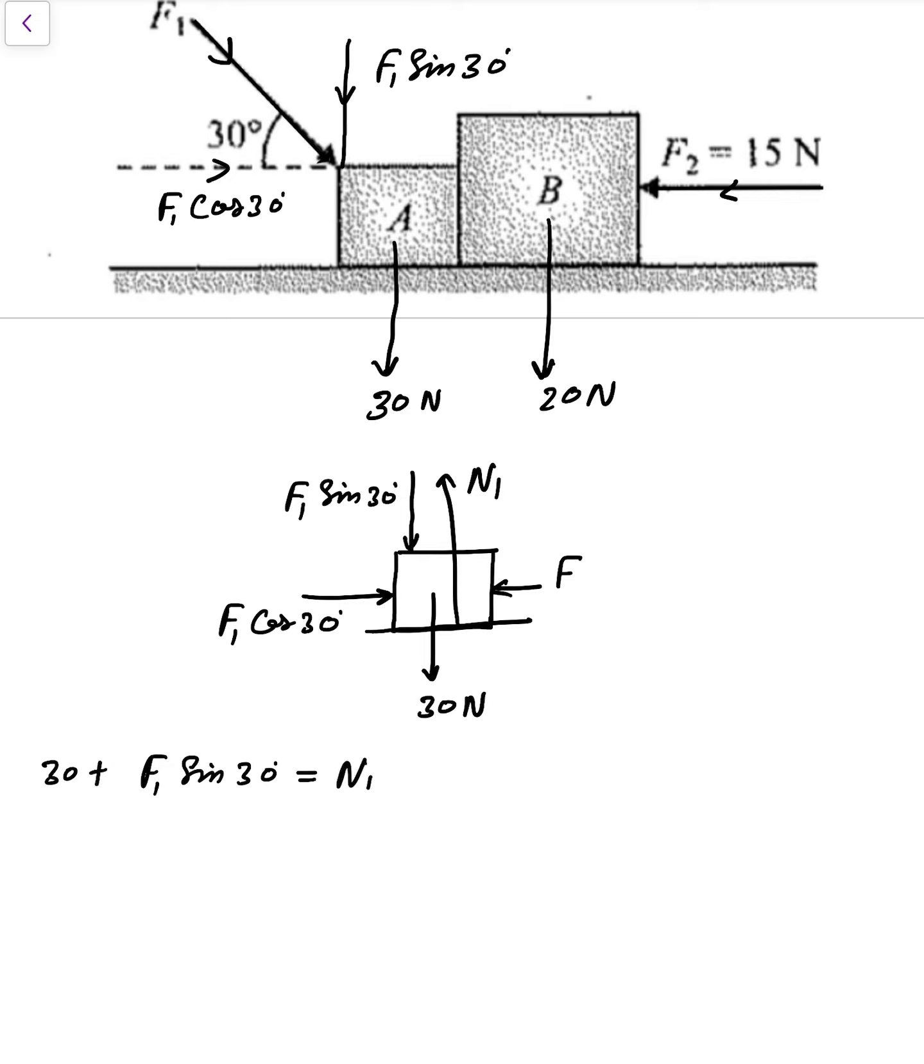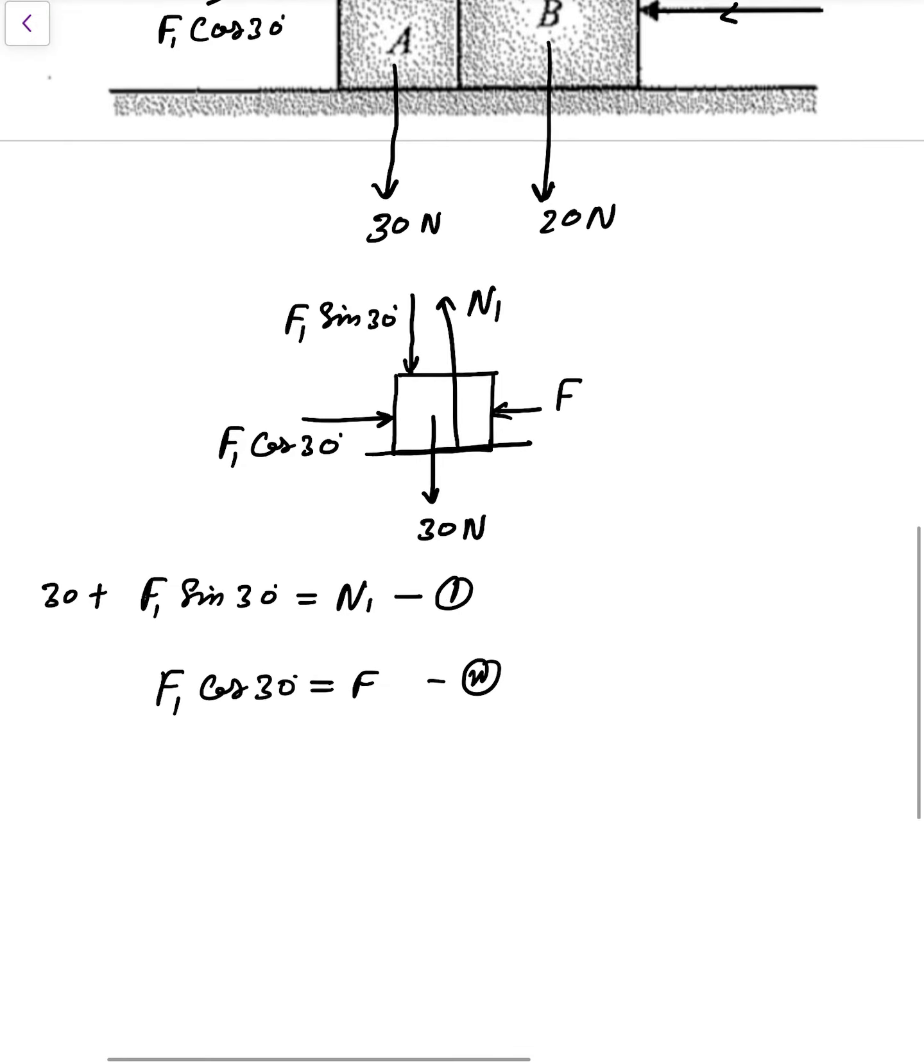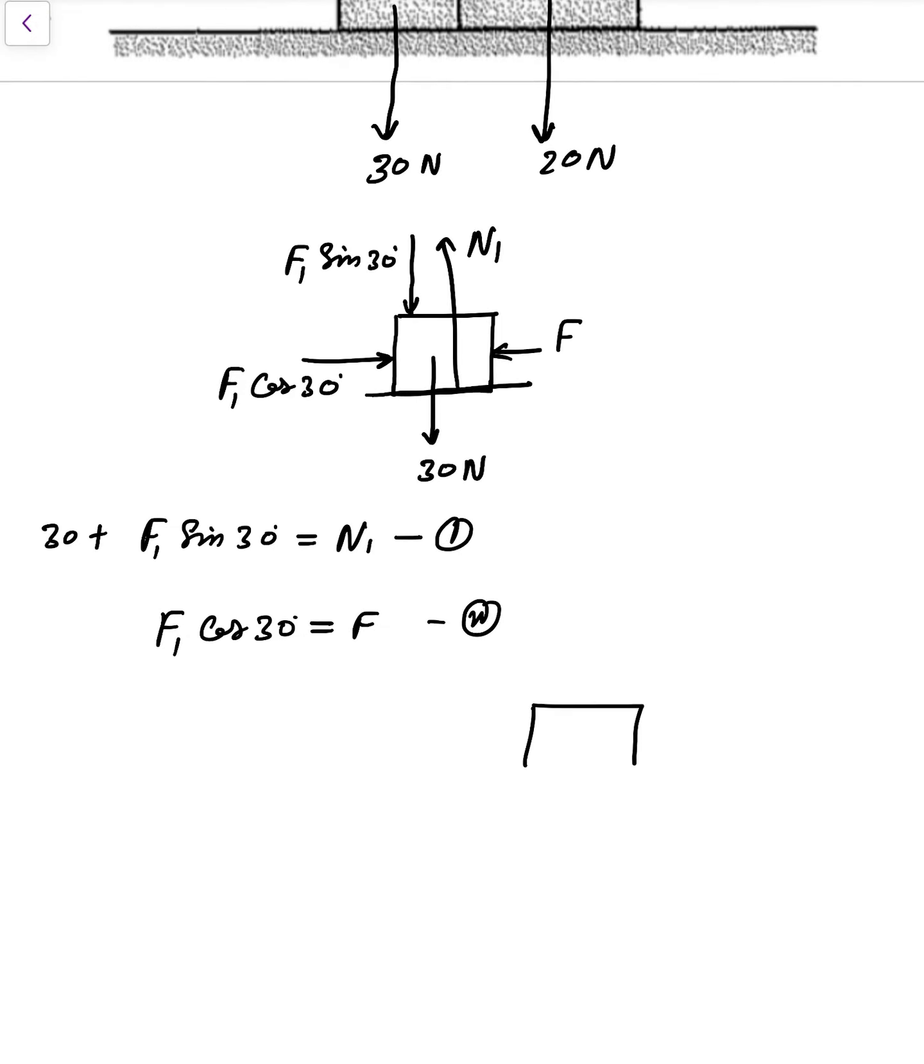And F1 cos 30, this will be equal to F. That is equation number one and that one is equation number two. Now after that, if you make free body diagram of block B.